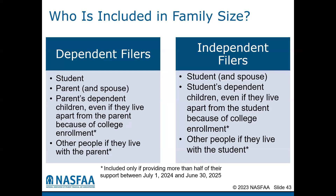For independent filers, they will include themselves, the student, their spouse, the student's dependent children, even if they live apart from the student because of school enrollment, and other people that may live with the student who the student can show they provide more than 50% of the financial support for in that FAFSA year. A change from prior FAFSAs is that an unborn child can no longer be considered in the family size.